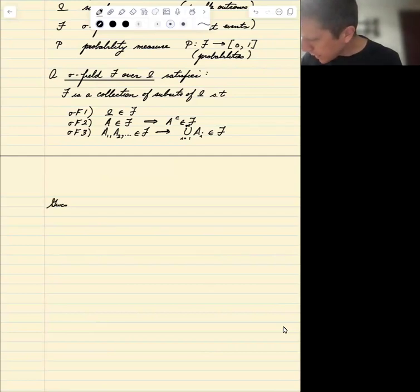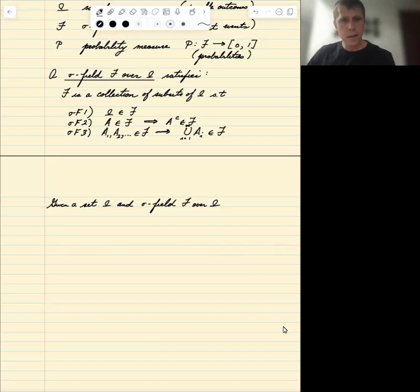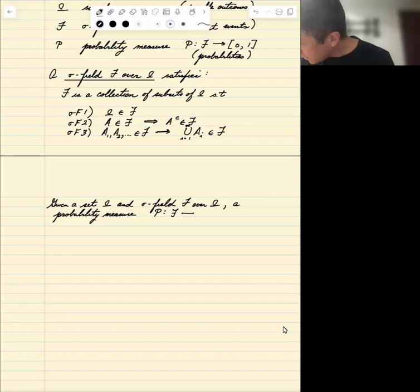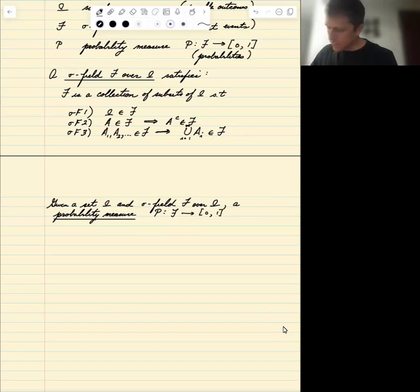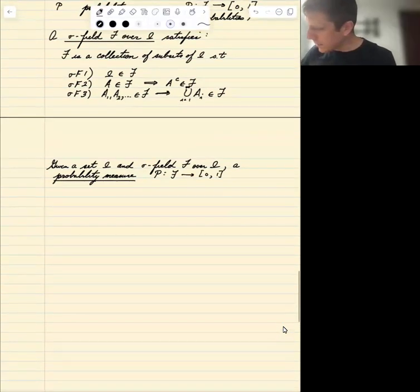So given a set omega, that's our sample space, and a sigma field F over omega, a probability measure P, which is a function from subsets in F to [0,1], satisfies three axioms.